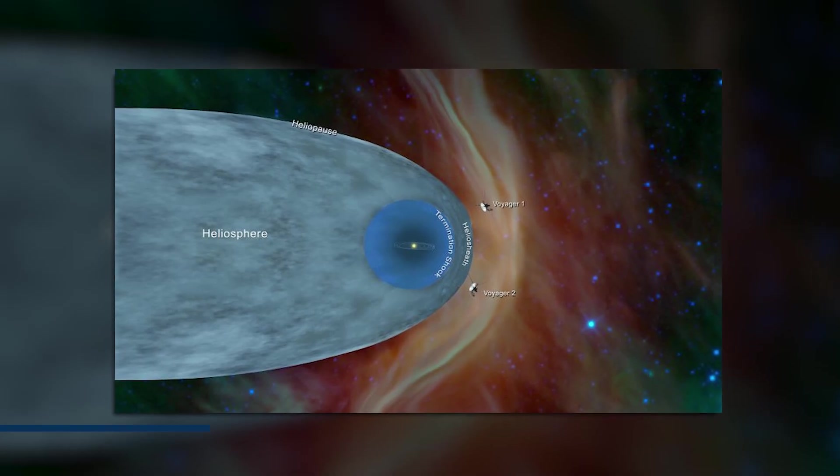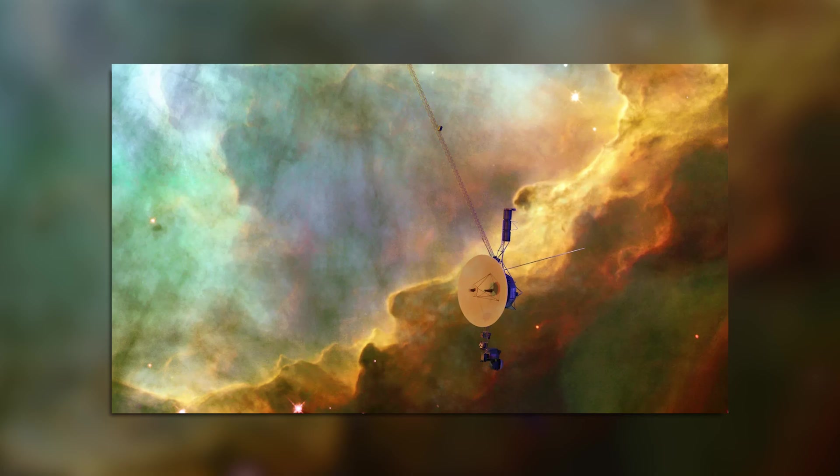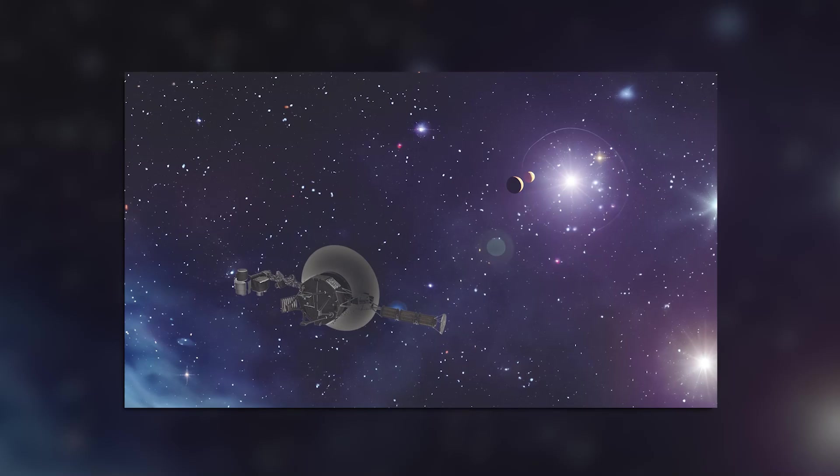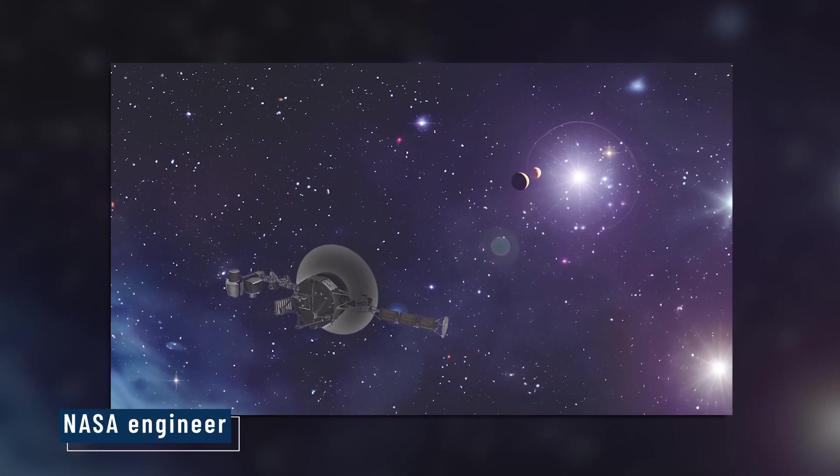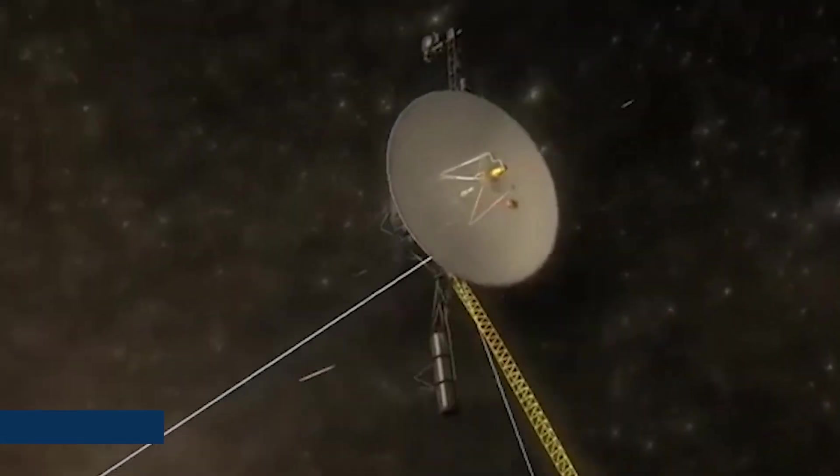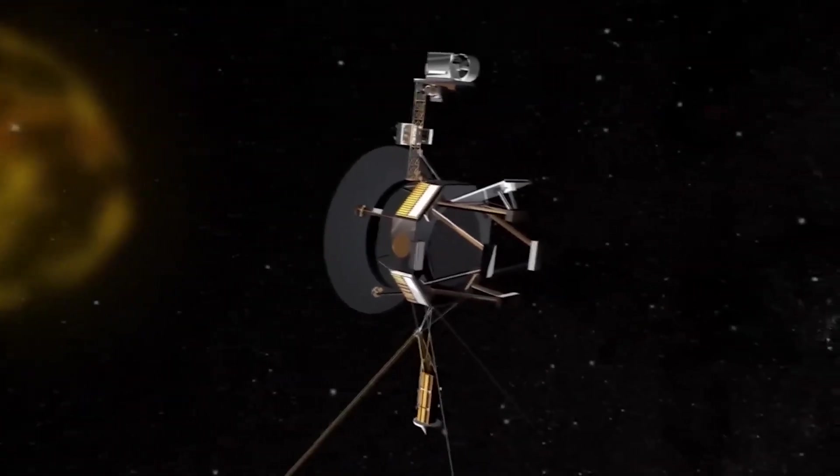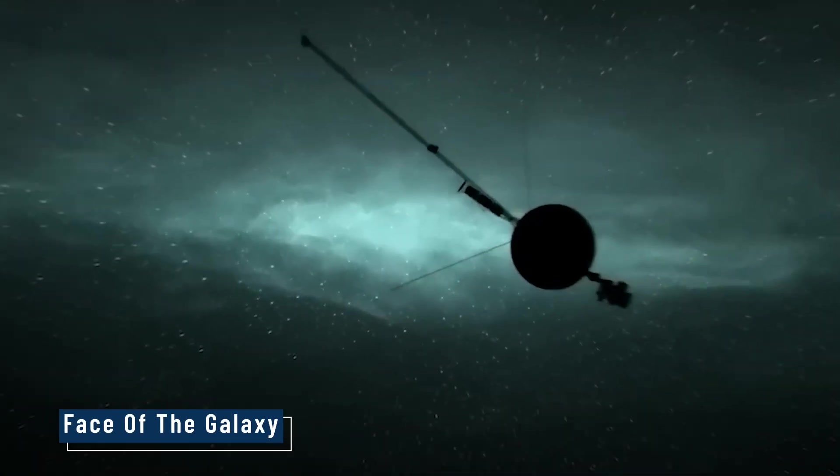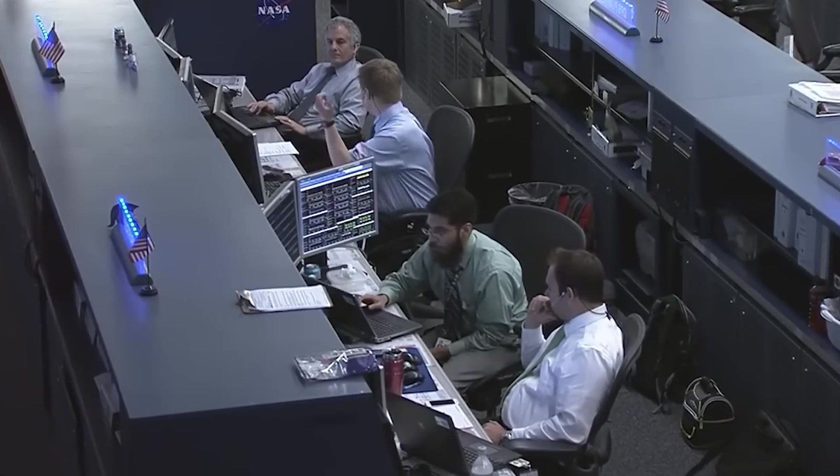When Voyager 1 crossed the heliopause in 2012, it moved beyond the influence of the Sun's solar wind. The environment out there is nothing like we imagined. It's like walking into the unknown with a blindfold on, said a NASA engineer. Solar particles faded, and Voyager was hit by cosmic radiation we've never experienced before. Out here, there's no magnetic protection, no gentle solar wind, only the raw, harsh face of the galaxy. But what Voyager started sending back was far stranger than expected.